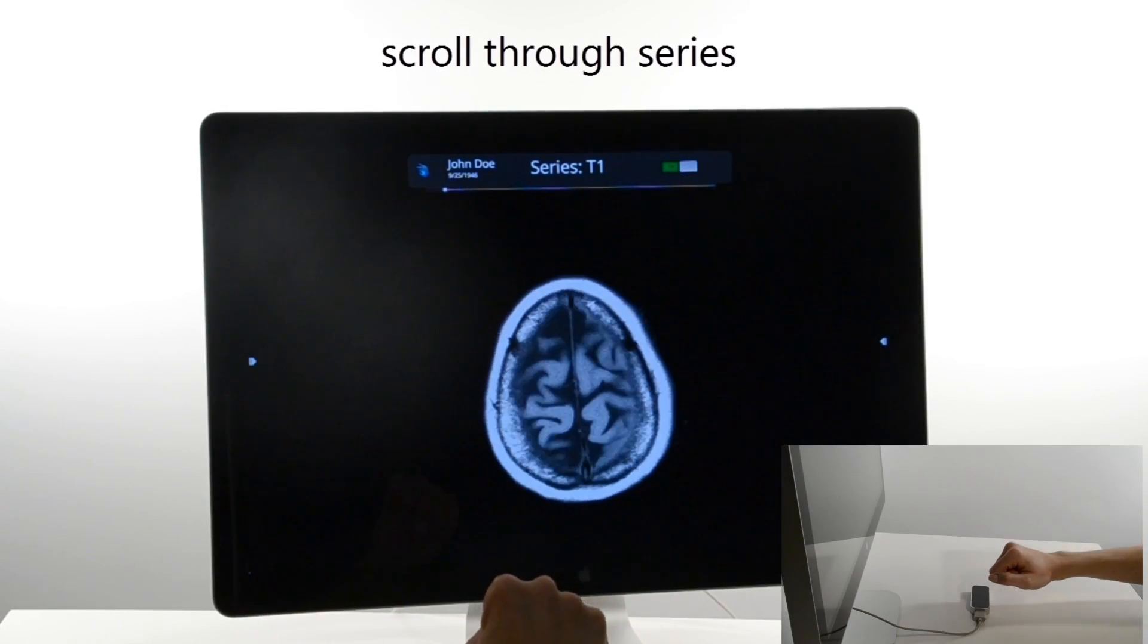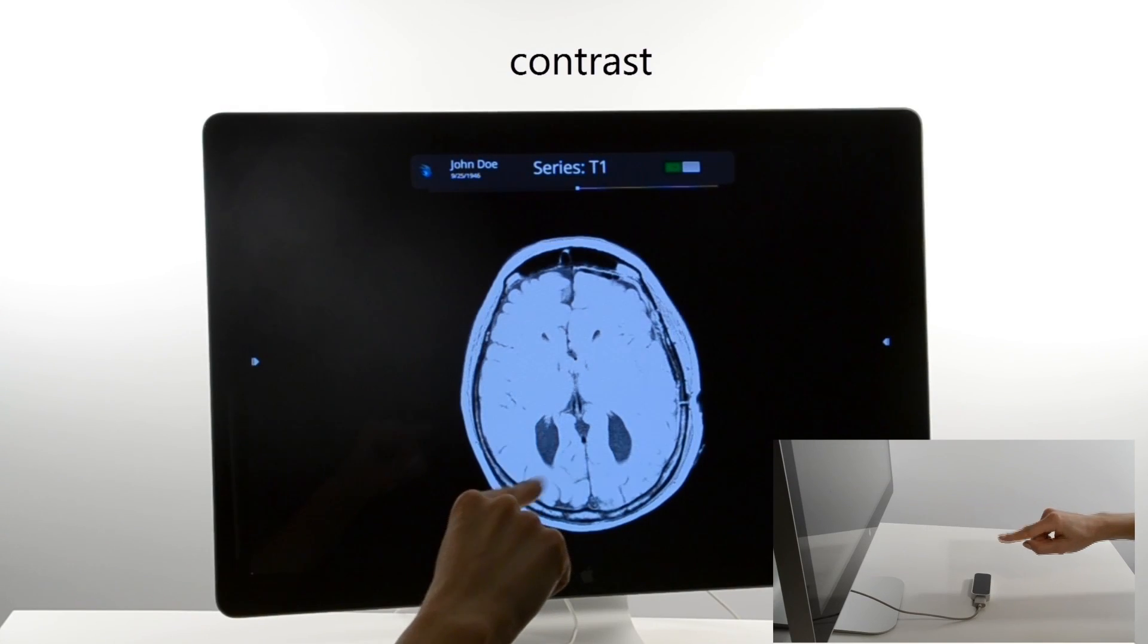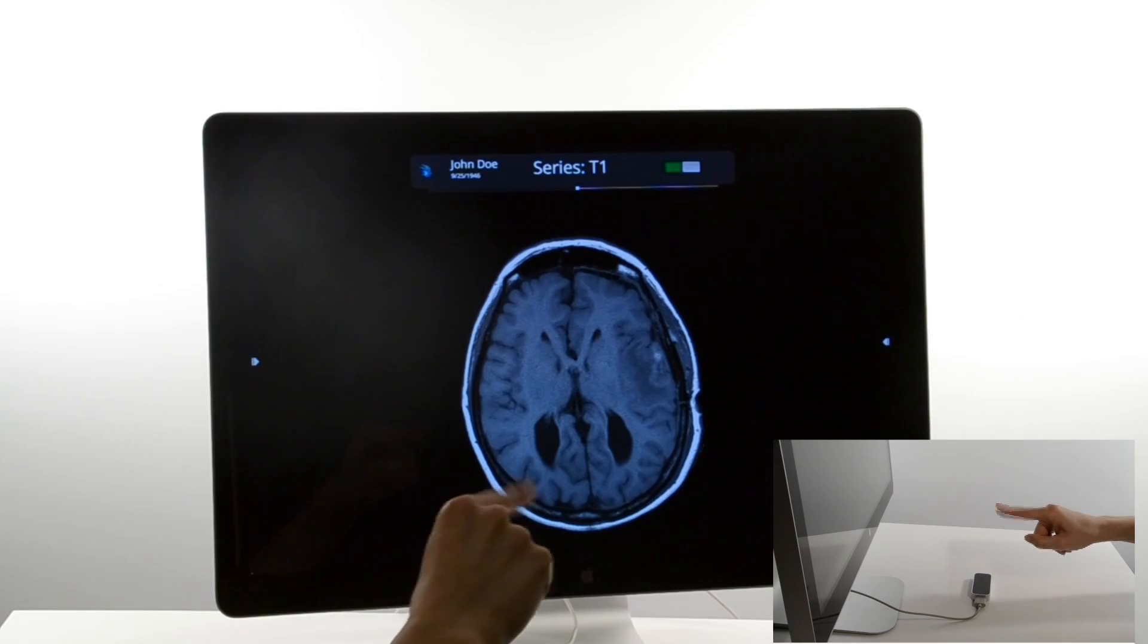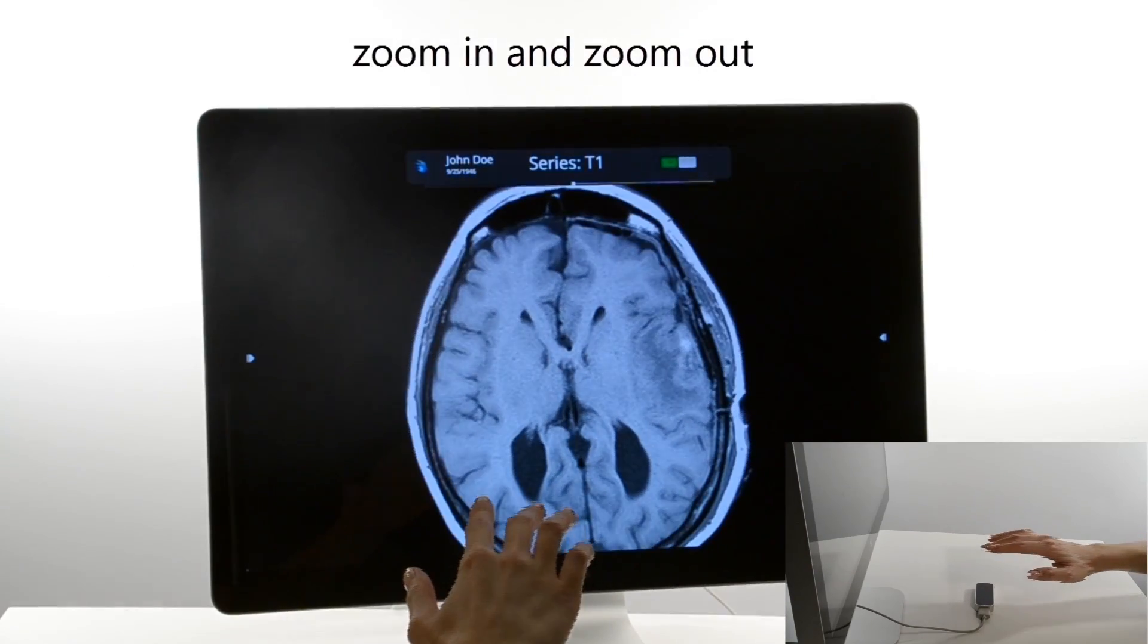The interactions with the viewer are encoded in the form of hand gestures. For instance, you can use your closed hand to scroll through a series of images or simply rotate your finger clockwise or counterclockwise to adjust image contrast. You can use your palm to zoom and pan the image.